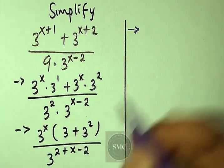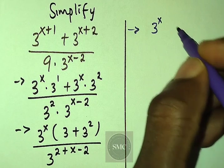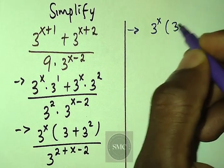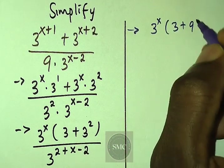So you are going to have 3 to power x, then this will be 3 plus 3 to power 2 is 9.